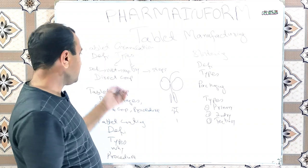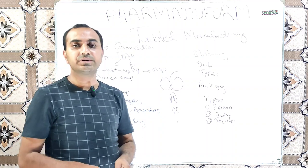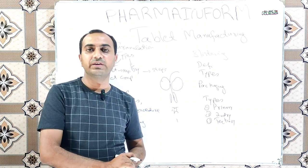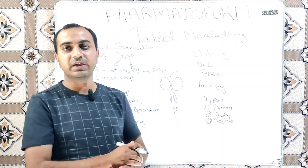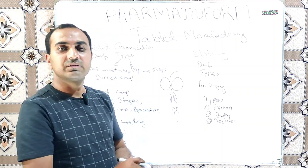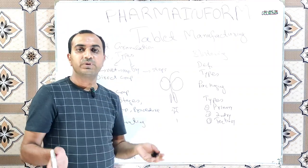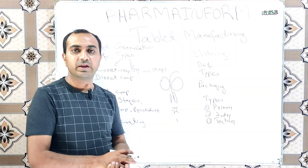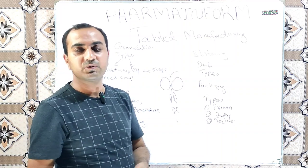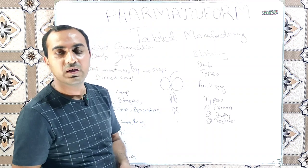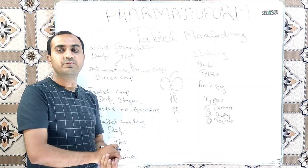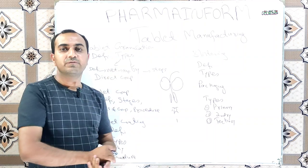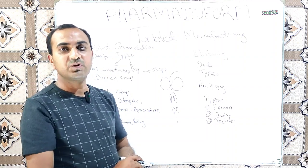The third method is direct compression. Its steps are simply weighing, sieving, and final mixing. We weigh excipients and APIs, sieve them, mix all excipients and APIs according to the BMR, and the blend is ready for compression.